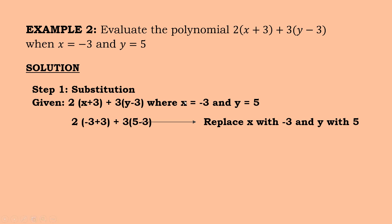So here, the value of our x is negative 3. So replace x, all x, with negative 3. So now, since the value of your x is negative 3, so we'll replace here. So 2 times negative 3 plus 3 plus 3 times 5 minus 3. Because the value of our y is 5. So replace x with negative 3, and y with 5.